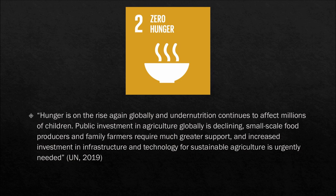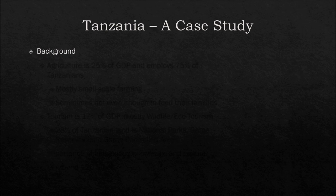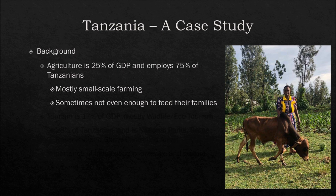I studied abroad in Tanzania and Kenya during the spring semester 2019, and I thought I'd include Tanzania as a case study since human wildlife conflicts in agriculture are so huge there. In Tanzania, agriculture is 25% of gross domestic product and employs about 75% of Tanzanians — much higher than the U.S., where agriculture is less than 2% of the labor force and around 1% of GDP. Most of this agriculture is small-scale farming, where families farm primarily to feed themselves and sell some of their product — sometimes not even growing enough to support their own families.